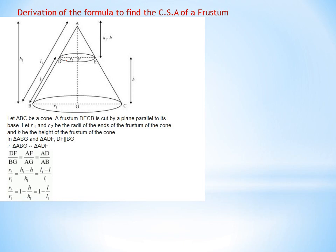Observe triangles AFD and AGB — both are right-angled triangles. Angle AFD equals 90°, angle AGB equals 90°, and angle A is common to both triangles. Therefore, triangle AFD is similar to triangle AGB by AA similarity criteria, and the ratio of their corresponding sides will be equal.